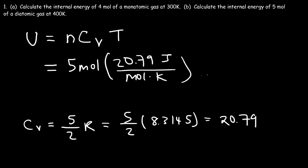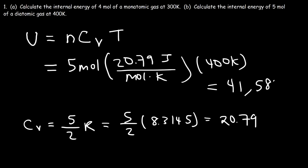The temperature is 400 Kelvin in this example. So it's 5 times 20.79 times 400 Kelvin, giving an answer of 41,580 joules. That is the internal energy of this particular diatomic gas.